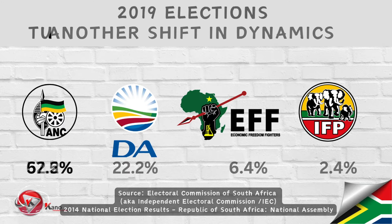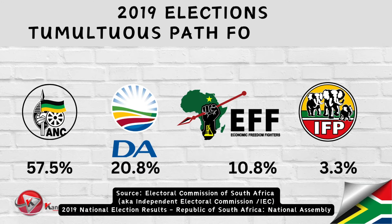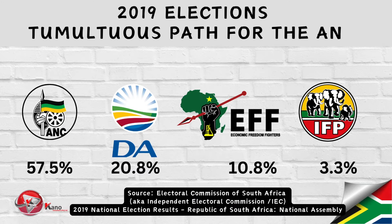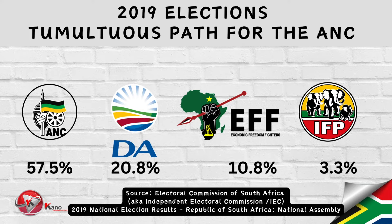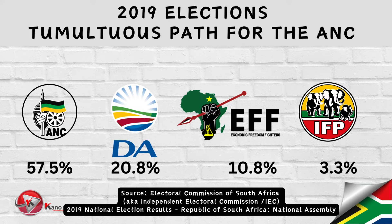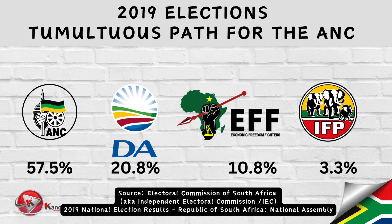In the most recent national and provincial elections in 2019, the ANC held on to power, but their margin decreased significantly compared to previous elections. The DA, while maintaining its position in the National Assembly, also experienced a slight decline. However, the EFF continued to gain ground.